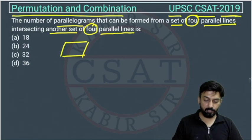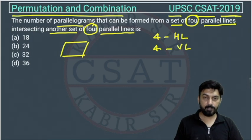How many horizontal lines are we having? We are having four horizontal lines and then intersecting another set of four parallel lines. So there are other four parallel lines, vertical lines which are intersecting.